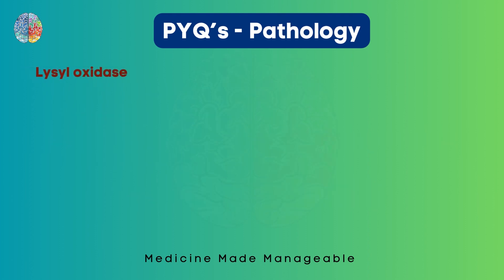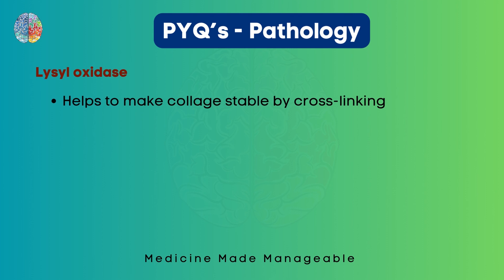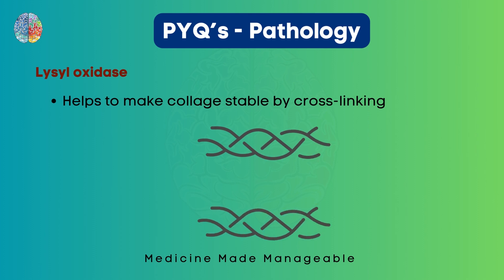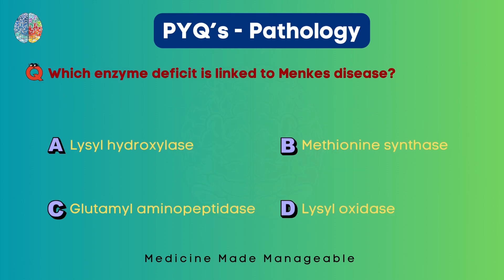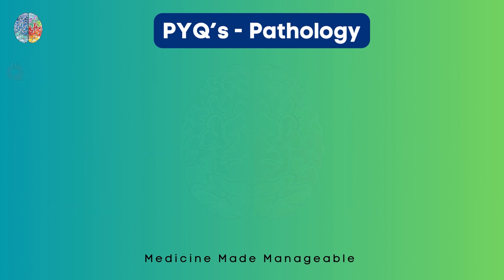Lysyl oxidase helps in making collagen stable by helping in the formation of cross-links. So if you take collagen as an example, forming these cross-links and making it more stable is the function of Lysyl oxidase. The answer is Lysyl oxidase.